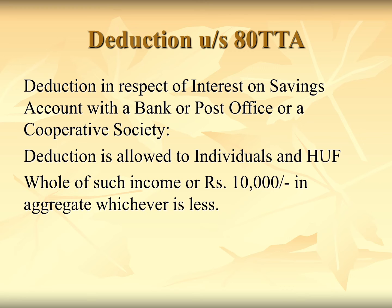The amount of deduction under 80 TTA is the whole of such interest or rupees 10,000 in aggregate, whichever is less. That is, if the interest on savings account with a bank or post office is less than rupees 10,000, the entire amount will be allowed as a deduction. But if the total interest exceeds rupees 10,000, then only a deduction of rupees 10,000 will be allowed.